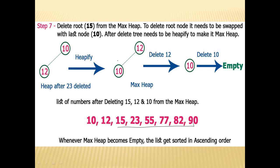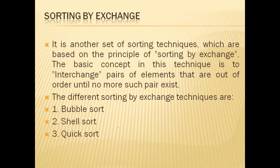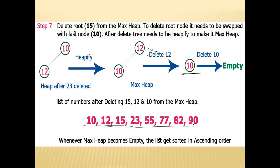So, 12 and 10 are the final elements. 12 is deleted and placed in sorted position, and the last element 10 reaches its position. This is the way of performing heap sort. We will continue with the remaining sorting techniques in the next classes. Thank you.